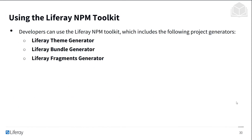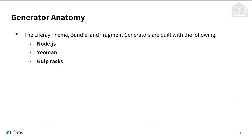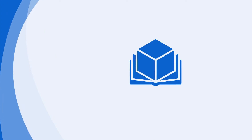The Liferay NPM toolkit includes the following project generators: the theme generator, the bundle generator, and the fragments generator. The Liferay theme, bundle, and fragment generators are built with the following technologies: Node.js, Yeoman, and Gulp tasks.